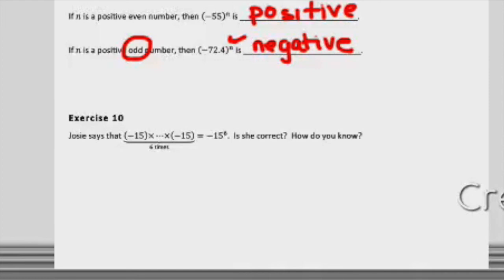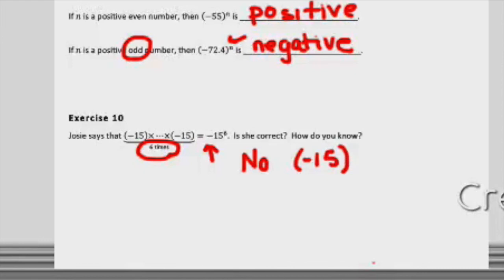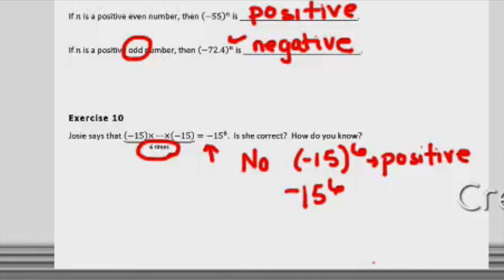In exercise ten, we have Josie saying that negative 15 repeatedly multiplied 6 times is the same as negative 15 to the 6th. This goes back to how you note negatives to a power. She is not correct, because negative 15 to the 6th power would be a positive product since 6 is an even power, whereas the opposite of 15 to the 6th would take 15 to the 6th and then make it negative. That's why we need negative values in parentheses when we want to take them to a power.